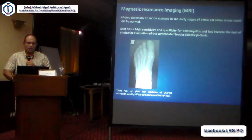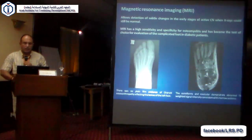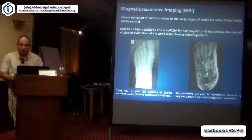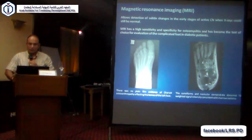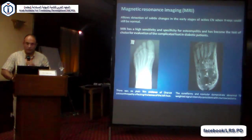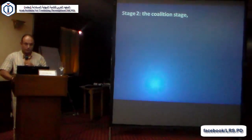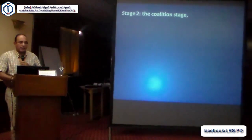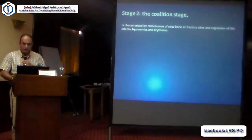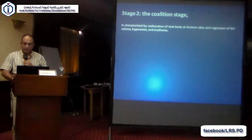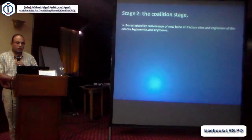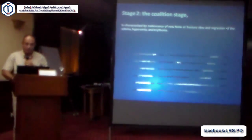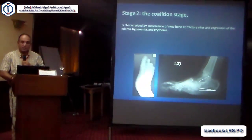Here is an example: a case with a normal X-ray, and here we can see significant MRI changes — hyperintense signal on T2 images including the navicular and cuneiforms. In the second stage, which is the coalescence stage, it is characterized by resorption at the fracture sites and regression of the inflammatory signs — regression of the edema, redness, and pain. We can clearly see the fractures and dislocations.